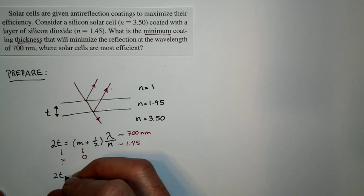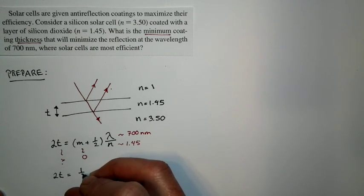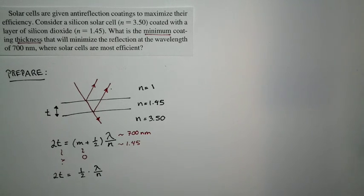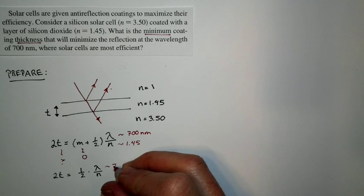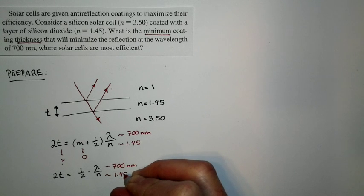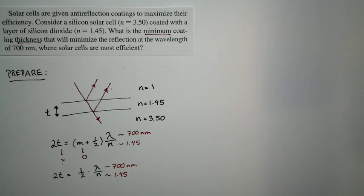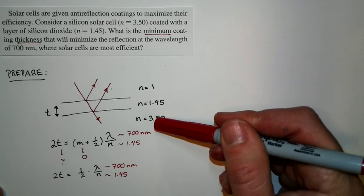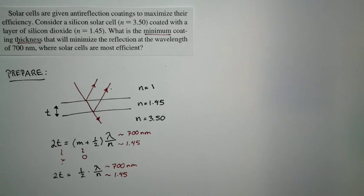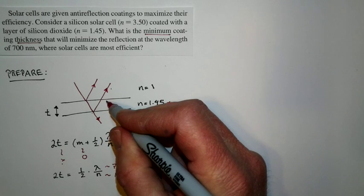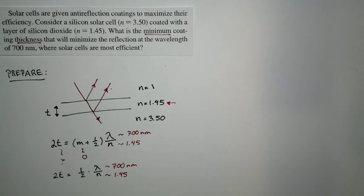Two times the thickness is equal to one-half times lambda over n. And the values that we use, as we noted before, lambda is equal to 700 nanometers. The index of refraction is 1.45. One of the things people get confused with in problems like this is which index of refraction do I use? I'm giving three in this problem. But you have to use this one because this is the layer that the light transits. It goes through the layer. And so that's the index of refraction we use here.